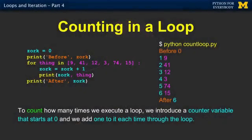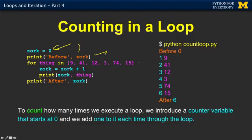The way it works is you set a variable to zero — this is the top part. Normally this would be called count, but I'm going to use a non-mnemonic variable called zork just so you don't get too used to it. We've seen zero so far. Then we go through thing being 9, 41, 12 — so thing is going to be the iteration variable.